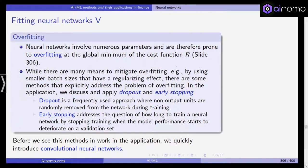Remember that a huge problem with neural networks is because of this huge number of parameters, we have a huge flexibility, overfitting becomes a huge problem. So we have numerous parameters and neural networks are prone to overfitting at the global minimum of the cost function. Now, while there are many means to mitigate overfitting, for example, by using smaller batch sizes that have a regularizing effect, there are also other simpler methods that explicitly address the problem of overfitting. And in the application, we will see two of these methods.